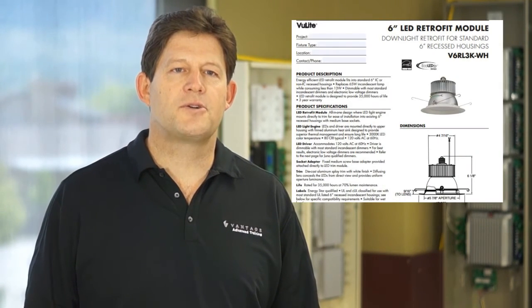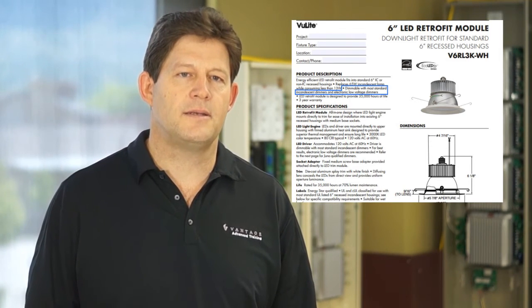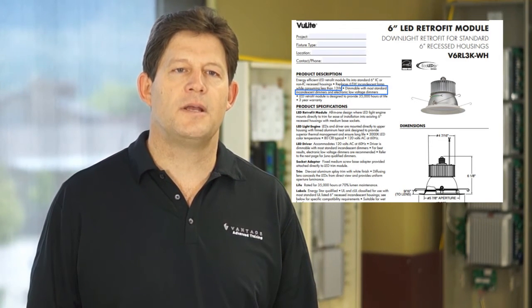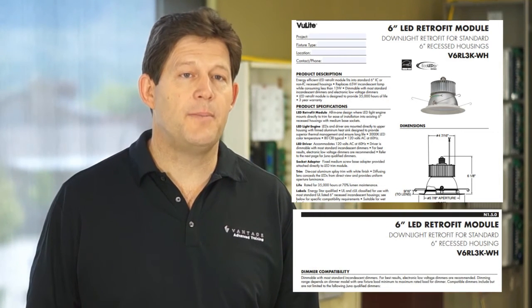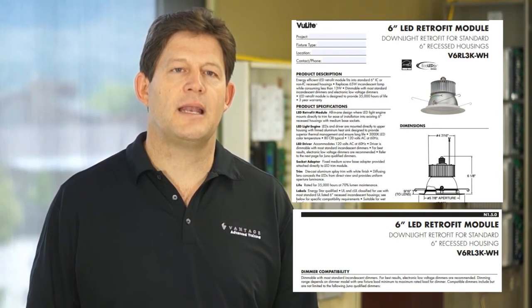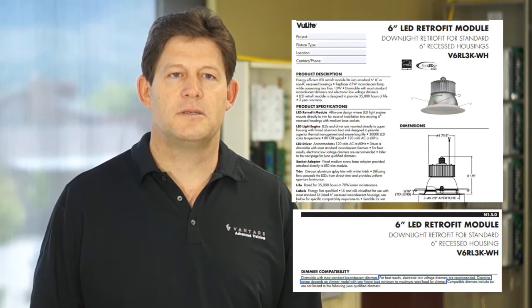In this example, the product description states that the product is dimmable with most standard incandescent dimmers and electronic low-voltage dimmers. Further along, there is a dimmer compatibility statement that clarifies that electronic low-voltage dimmers are recommended for best results. Without reviewing the entire document, I might have been inclined to assign loads to the standard dimming module. But with this additional information, I would definitely assign to an electronic dimming module.